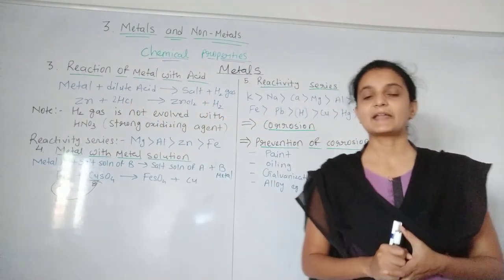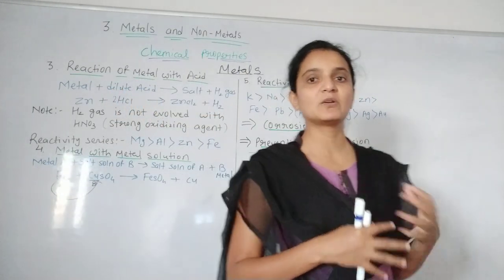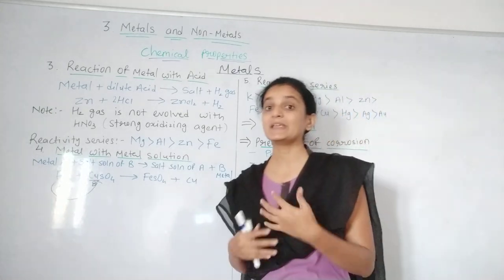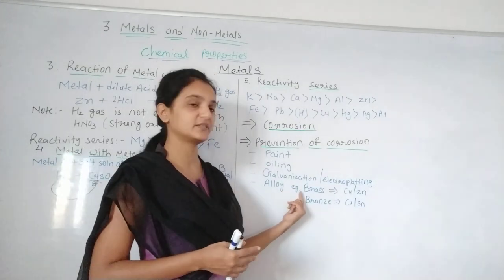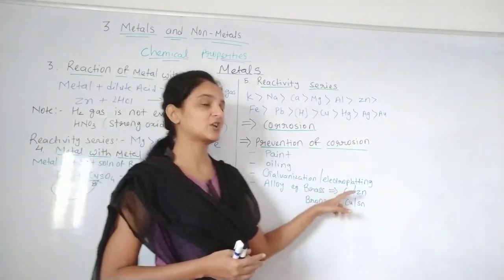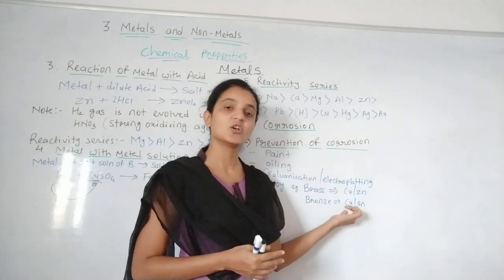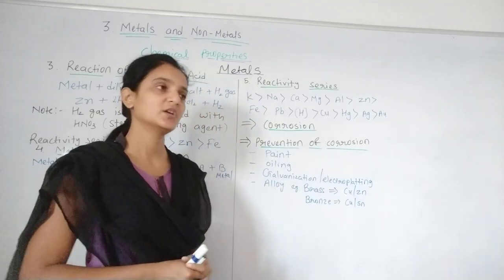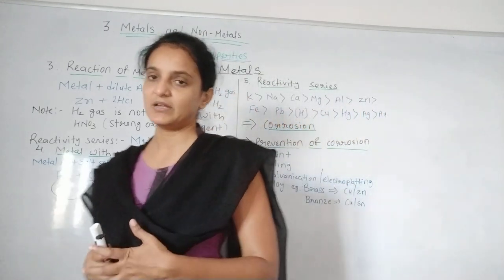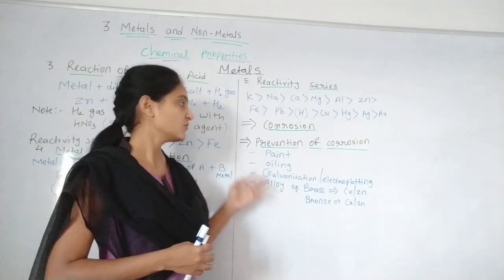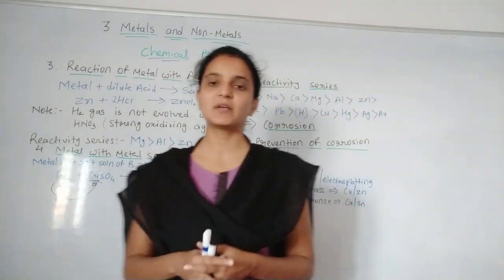We can also prevent rusting by preparing alloys. An alloy is a mixture of metals — by mixing metals their properties are changed and enhanced, and corrosion can be prevented. For example, brass is an alloy prepared from copper and zinc, and bronze is an alloy prepared from copper and tin. By mixing metals, properties are enhanced and rusting or corrosion can be prevented. These are some steps for the prevention of corrosion.